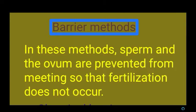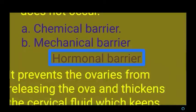In barrier methods, the sperm and ovum are prevented from meeting, so fertilization does not occur. There are two types of barrier method: chemical barrier method and mechanical barrier method.